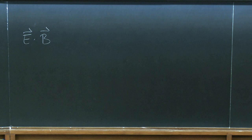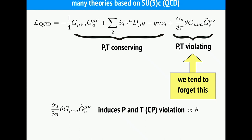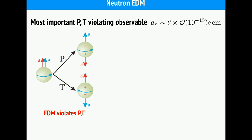If this theta term is present in nature, it will induce observables that violate parity and time reversal. These violations are proportional to the theta angle — the coupling constant of this operator. One of the observables we would see if this operator is there is an electric dipole moment for hadrons, for instance the neutron. The exact size of the electric dipole moment can be calculated in a number of ways.